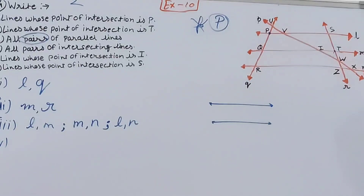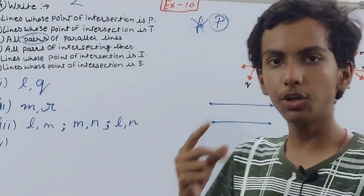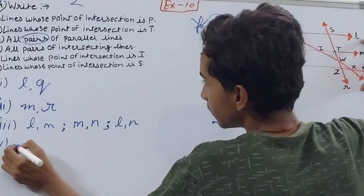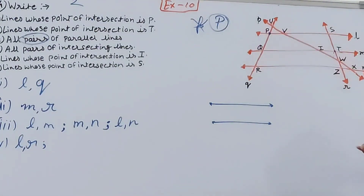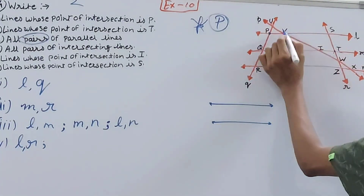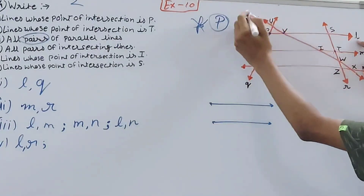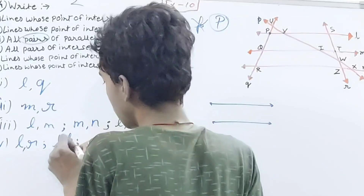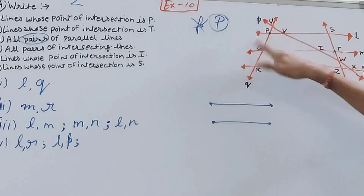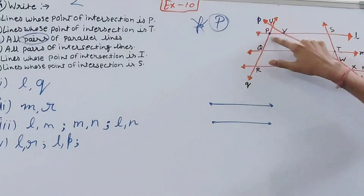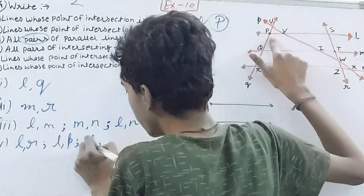For part four, we need all pairs of intersecting lines. Starting with line l: l intersects with r, giving pair l and r. Line l also intersects with p at point V, giving pair l and p. Line l also intersects with q at point P, giving pair l and q.